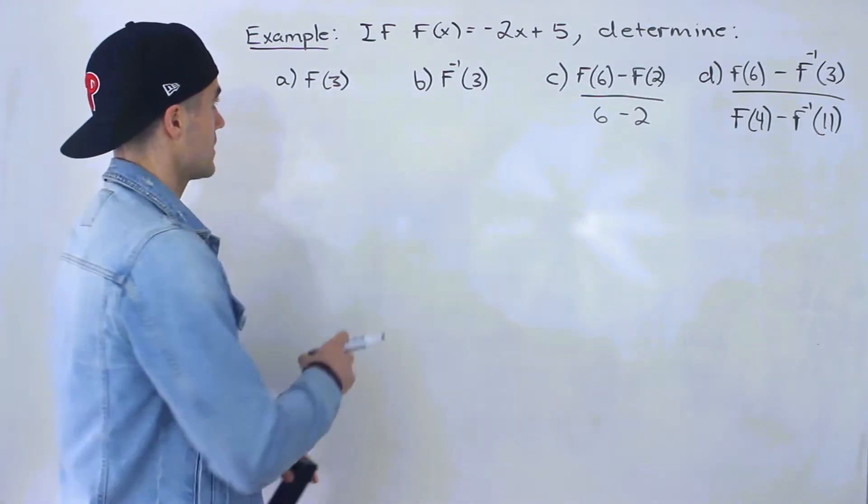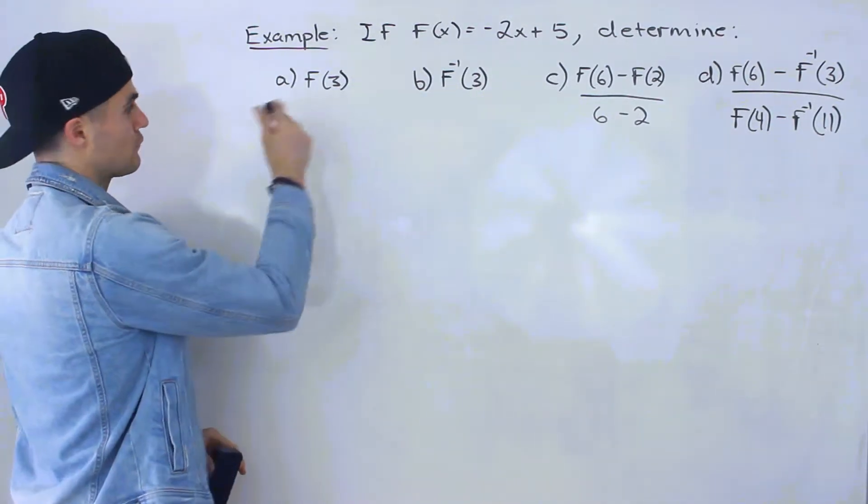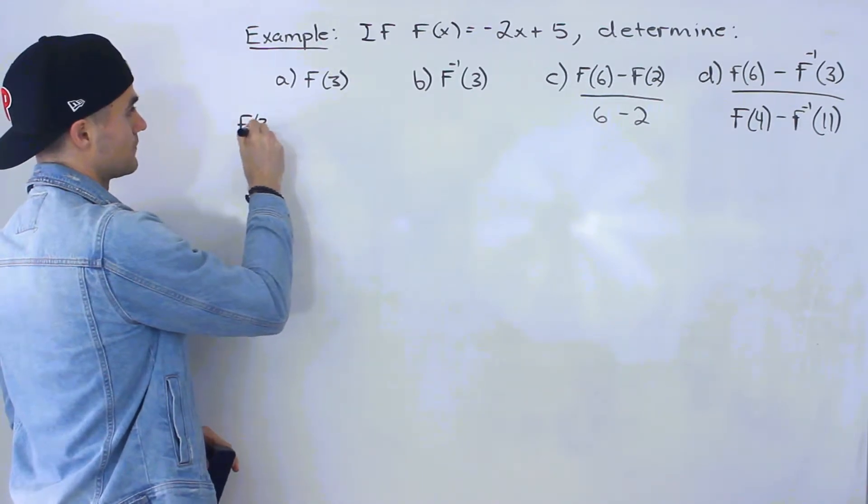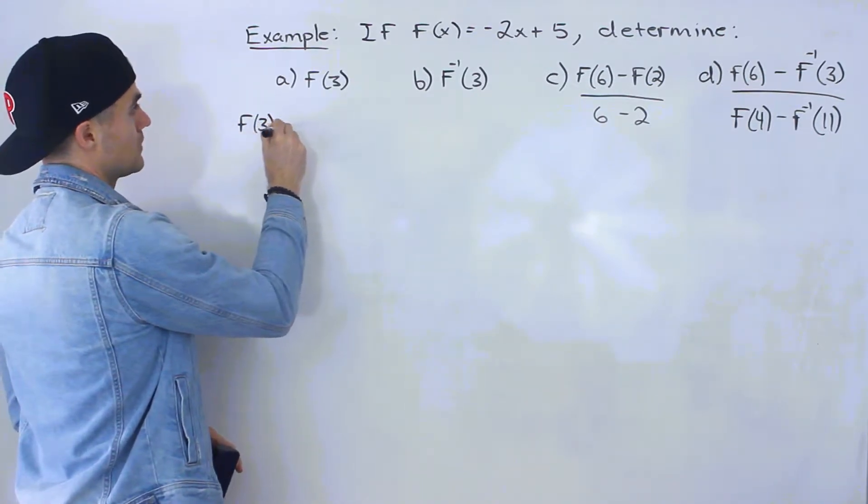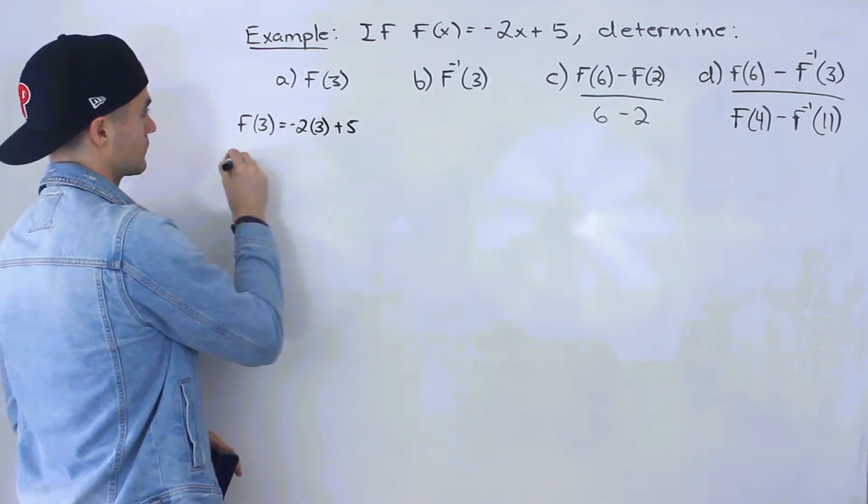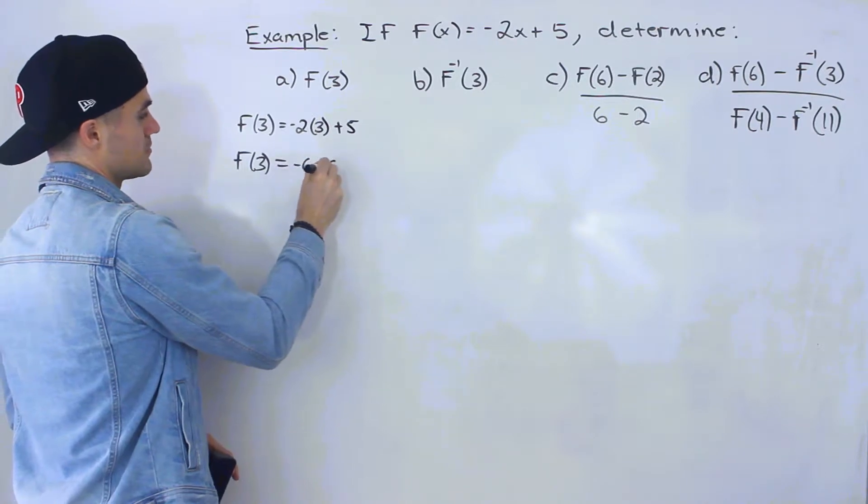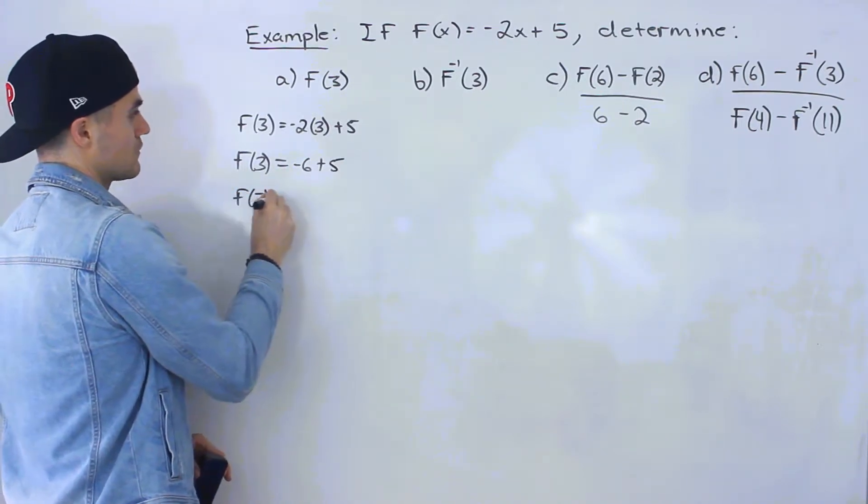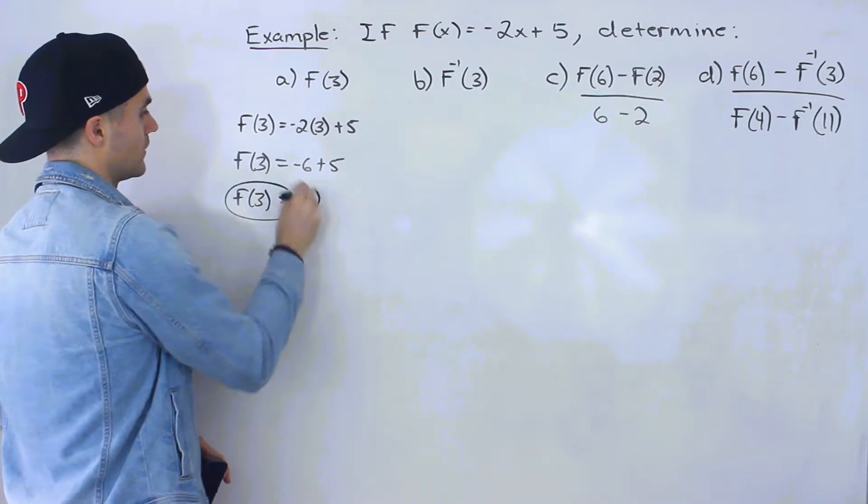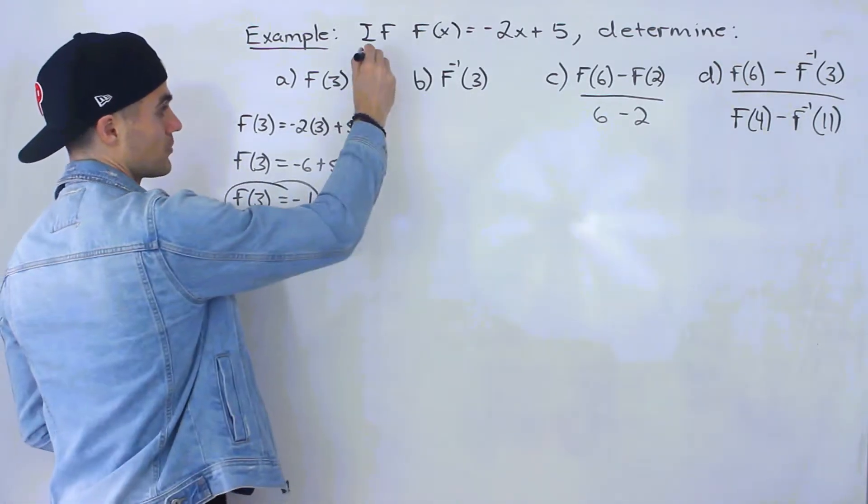So part a, pretty simple, f(3). We would just plug in 3 for the x values in the function. So f(3) would be -2 times 3 plus 5, which would give us -6 plus 5, which would give us -1. So that's the answer for part a, pretty simple.